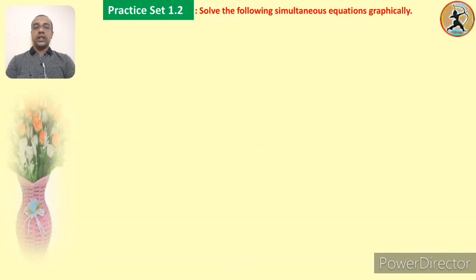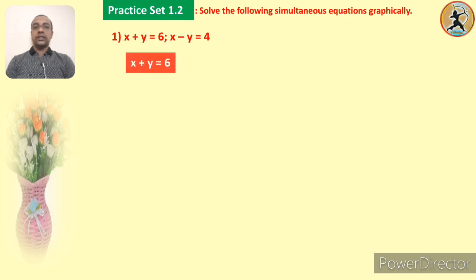Here is the first question. We have to solve the following simultaneous equations graphically. The first example has two simultaneous equations: x plus y is equal to 6, and the other one is x minus y is equal to 4. First of all we have to make a table which gives us the order pairs of the variables x and y for each simultaneous equation. Let us consider the first equation, x plus y is equal to 6.